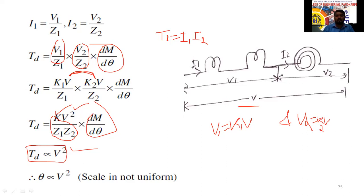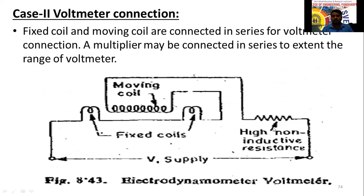To extend the range of the voltmeter, a high non-inductive resistance (multiplier) is connected in series with the meter. This is the same concept of shunts and multipliers discussed for PMMC.